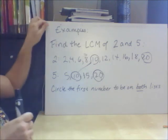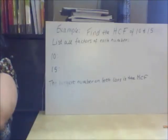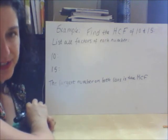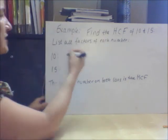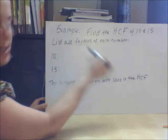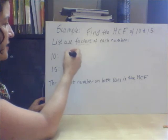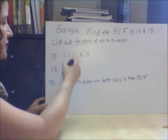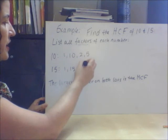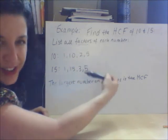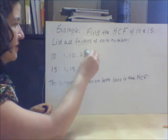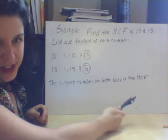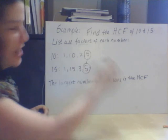Let's do the same with our factors — our highest common factors. This says: find the highest common factor for 10 and 15. First, you're going to list all the factors of each number. A factor is a number that goes into it. So 10 has the factors 1 and 10, and 2 and 5. 15 has the factors 1 and 15, and 3 and 5. If we look here, the largest number on both lists is the highest common factor — in this instance, our highest common factor is 5.